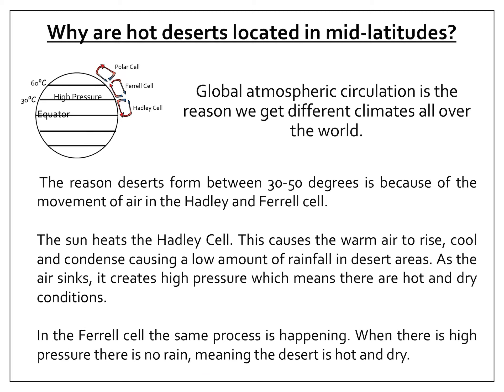Why are deserts located in mid-latitudes? Global atmospheric circulation is the reason we get different climates all over the world. The reason deserts form between 30 to 50 degrees is because of the movement of air in the Hadley and Ferrel cell. If you look at the diagram in the top left corner of the screen, you can see the cells clearly named. In the Hadley cell, the sun shines on the cell, causing warm air to rise. It then cools and condenses, and this causes a low amount of rainfall in the desert. As the air sinks, it creates high pressure, which means hot and dry conditions.